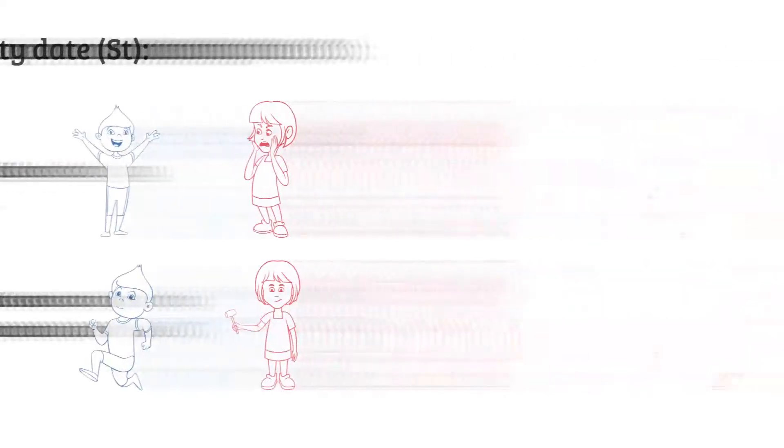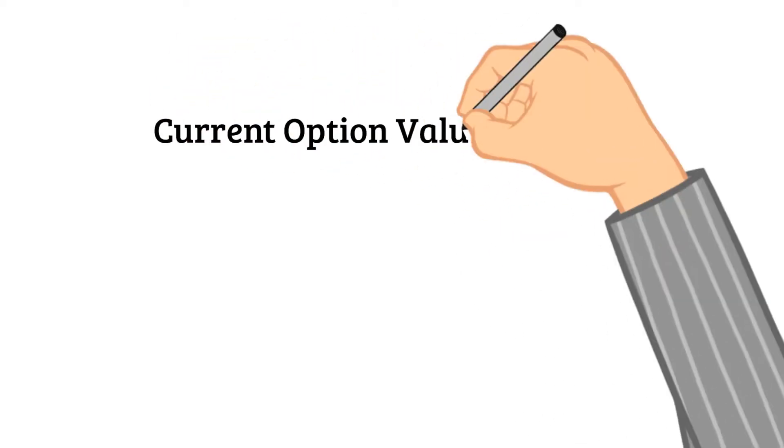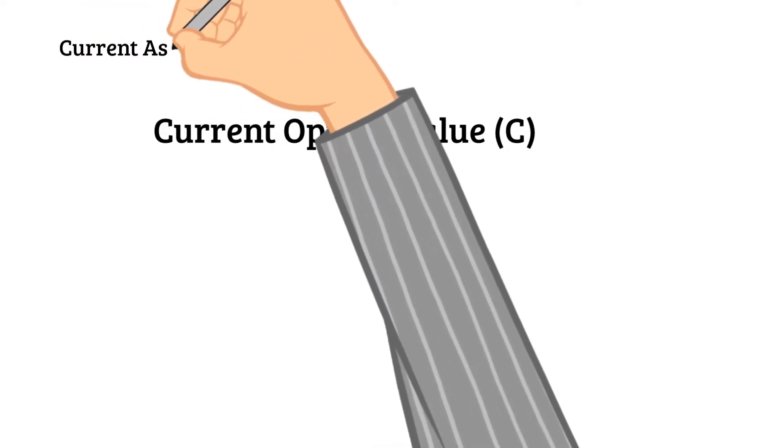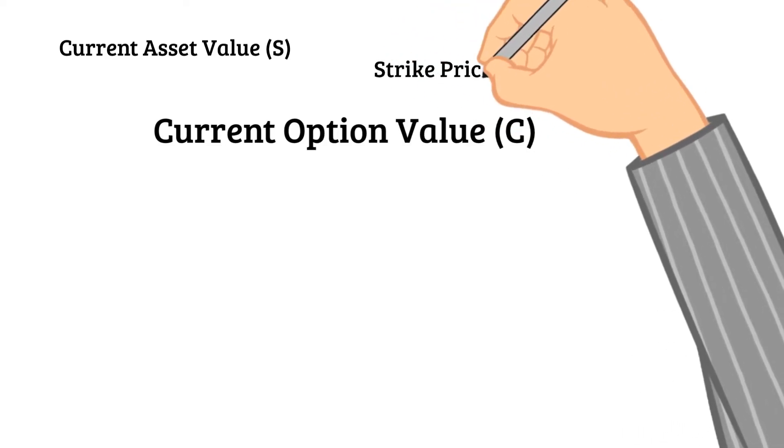Now another problem arises: how should investors and owners decide the amount of the current option value? Since Blue has the right of these stocks today, we should think S as the value that Blue gets and K as the value that Blue will pay in the future.